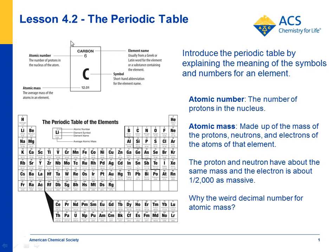So you can take one of the elements — in this case we've chosen carbon — and just look at the different aspects, like there's the element name, there's a big number here called the atomic number. You can explain that that's the number of protons in the nucleus of a carbon atom. Here's the symbol for carbon.